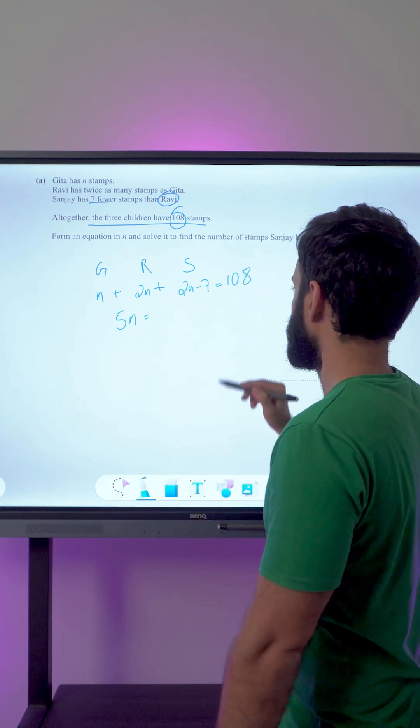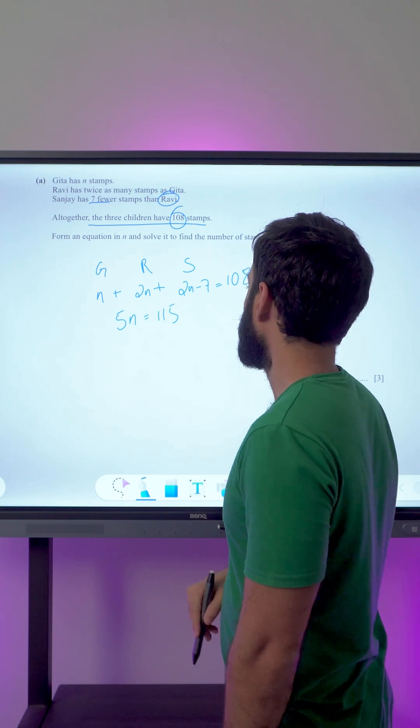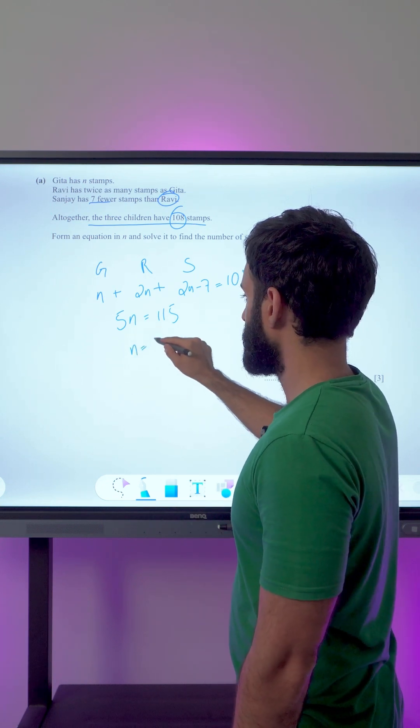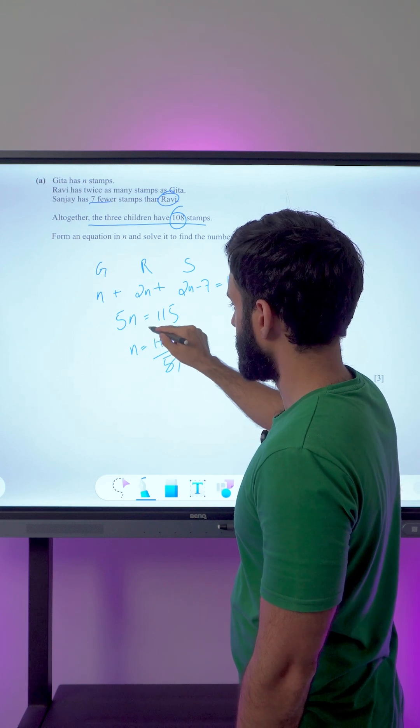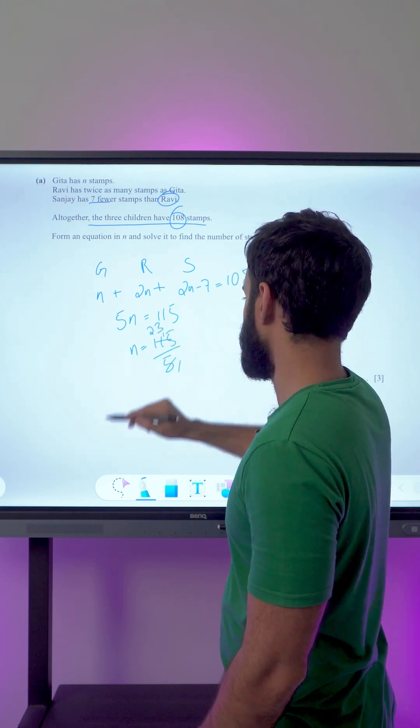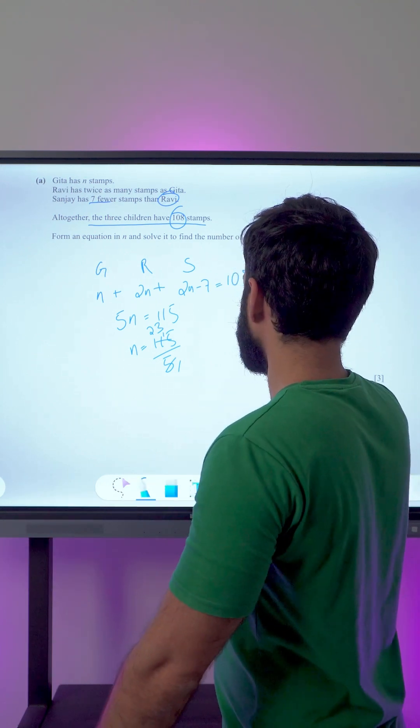Now let's see what the value of n is. n equals 115 divided by 5, so 5 ones are 5, 2s are 10, 1 carry, n equals 23. But don't get carried away, this may or may not be the final answer. So let's see what the question is saying.